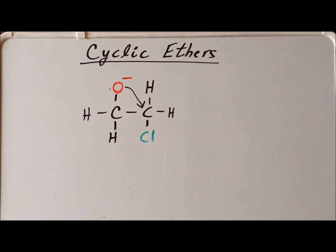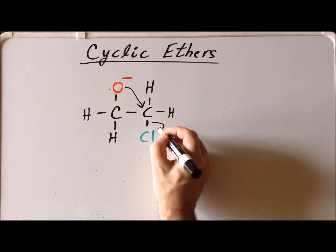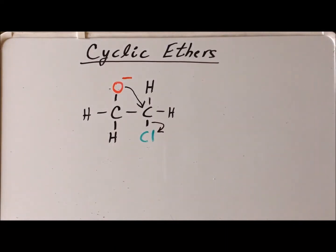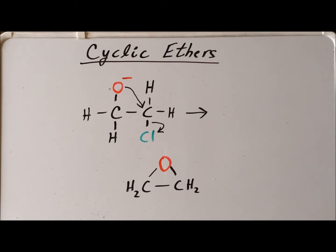The chlorine leaves with its electrons, so this bond breaks, and we end up with a cyclic ether with a three-membered oxirane ring. This important cyclic ether is called ethylene oxide, or known as EO for short.